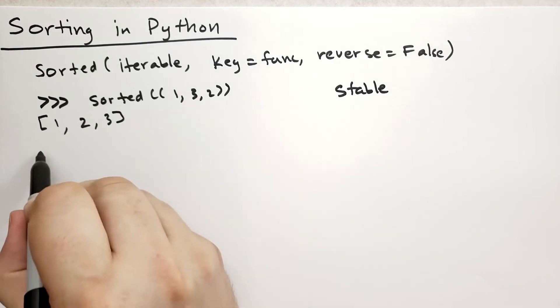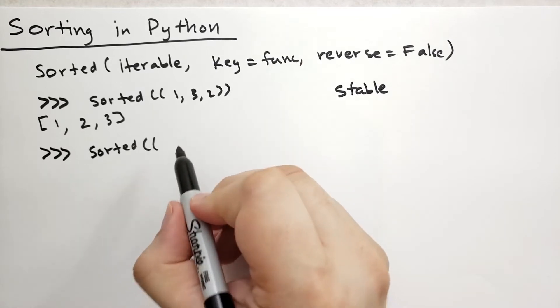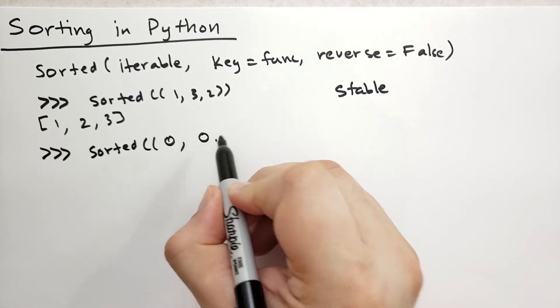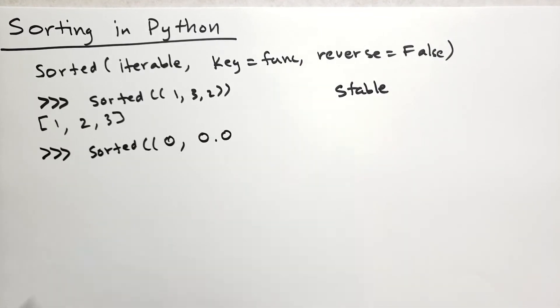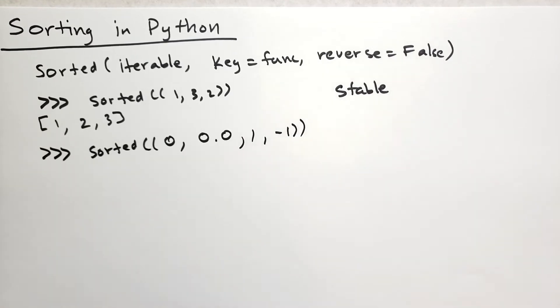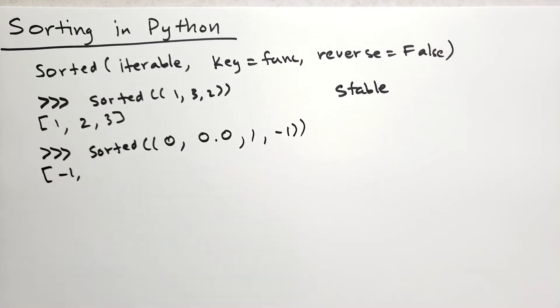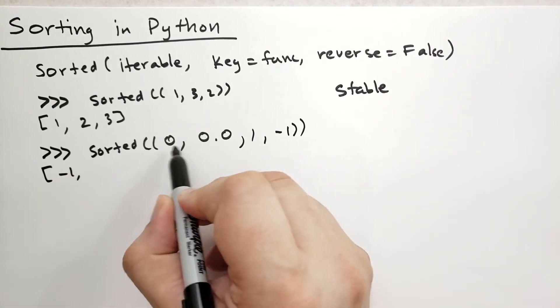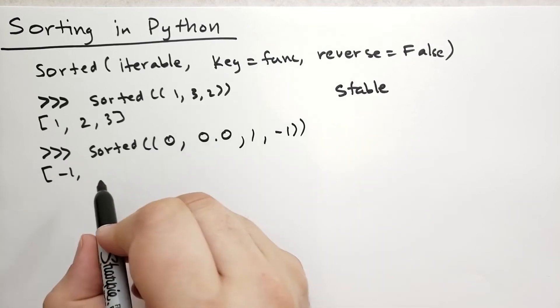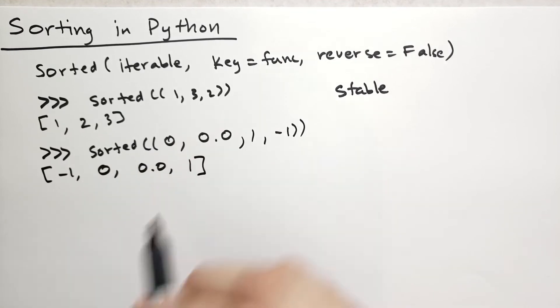As an example, we're going to sort a tuple with the integer 0 and then the floating point 0.0, then 1 and negative 1. It will start with the smallest which is -1, then it will preserve the order - 0 and floating point 0 compare equally, so it gives 0 then 0.0, then the larger number 1.